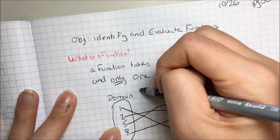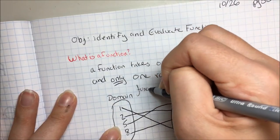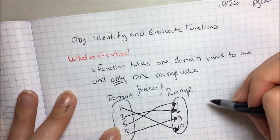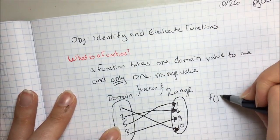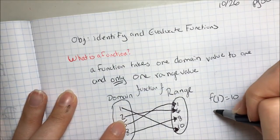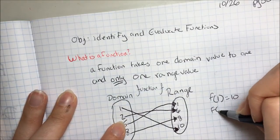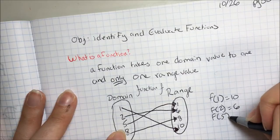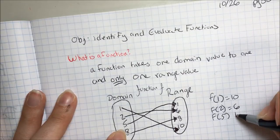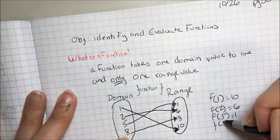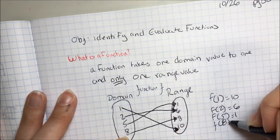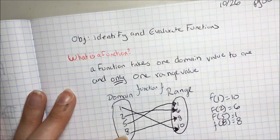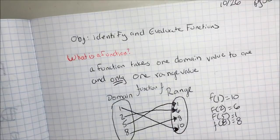We'll call this function f. So this means that f(1) is 10, f(2) is 6, f(5) is 1, and f(8) is 8. This is my rule for the function, and this makes a function.